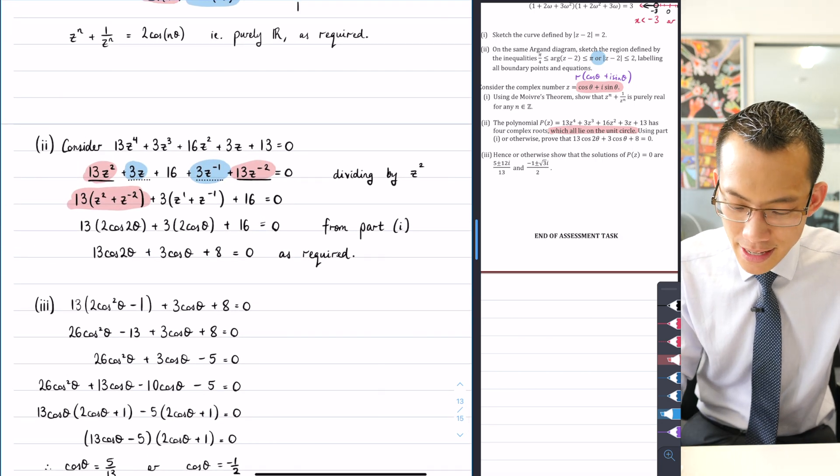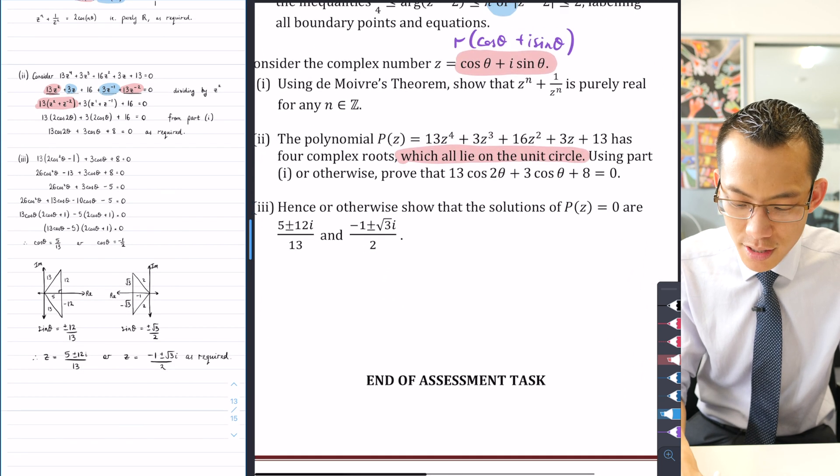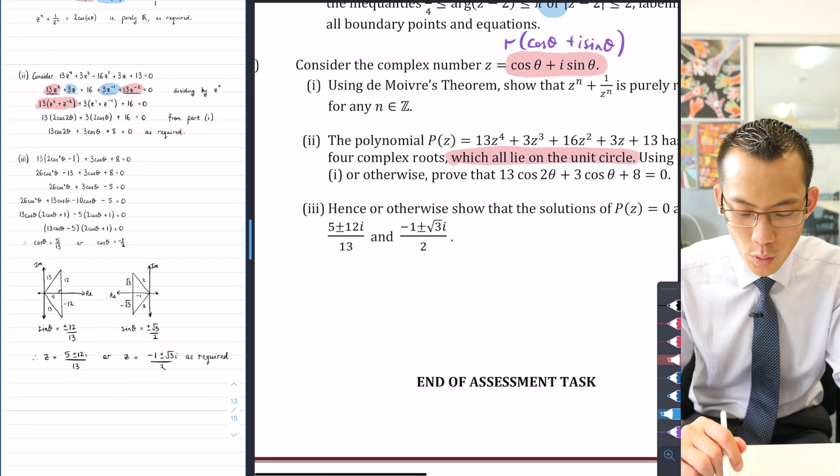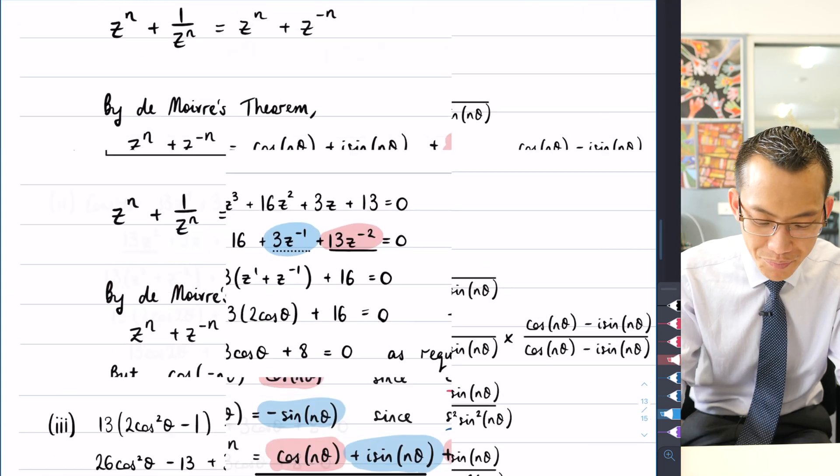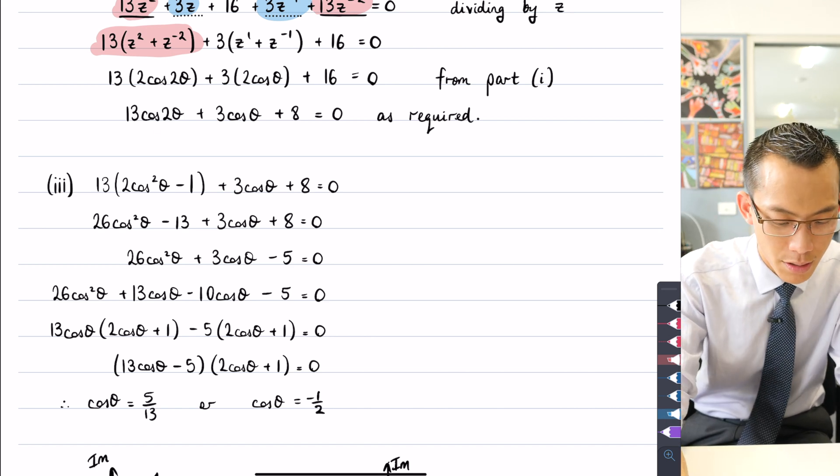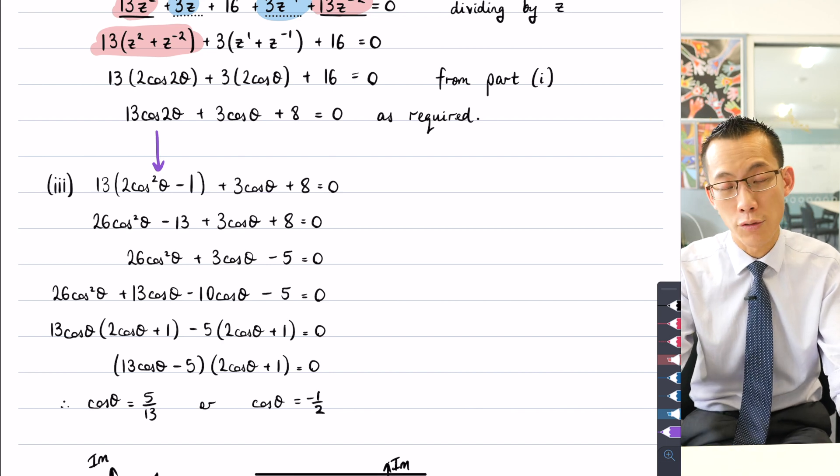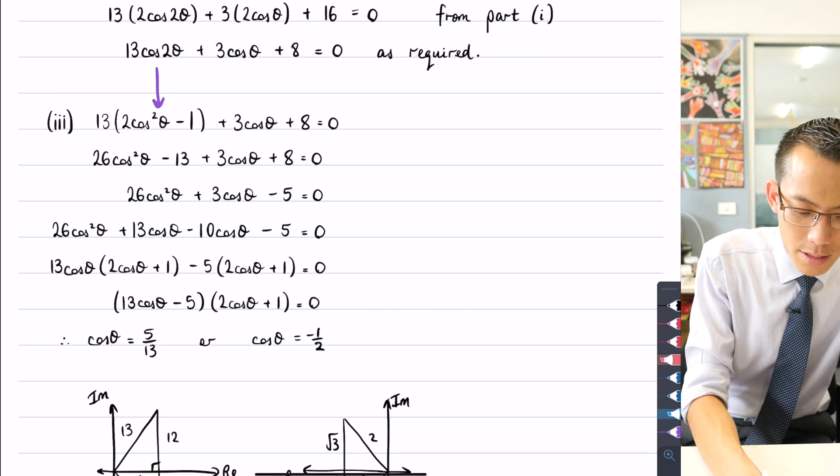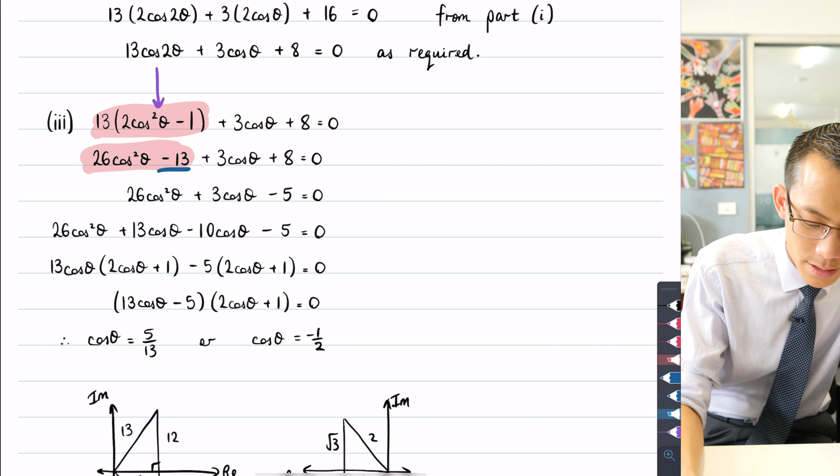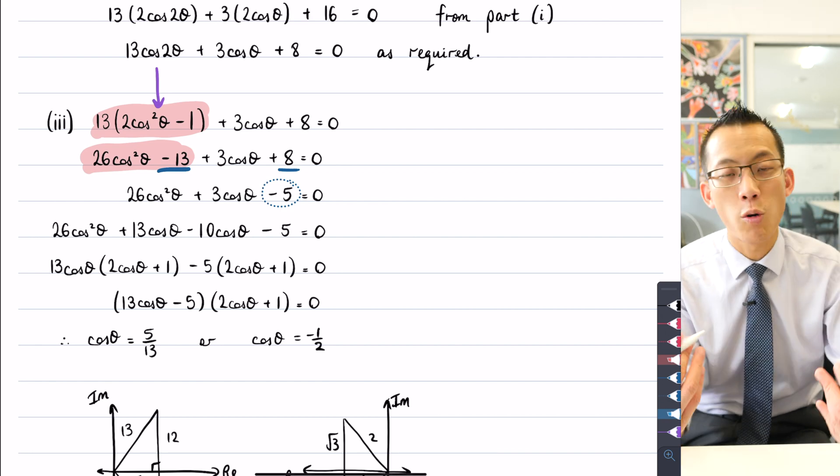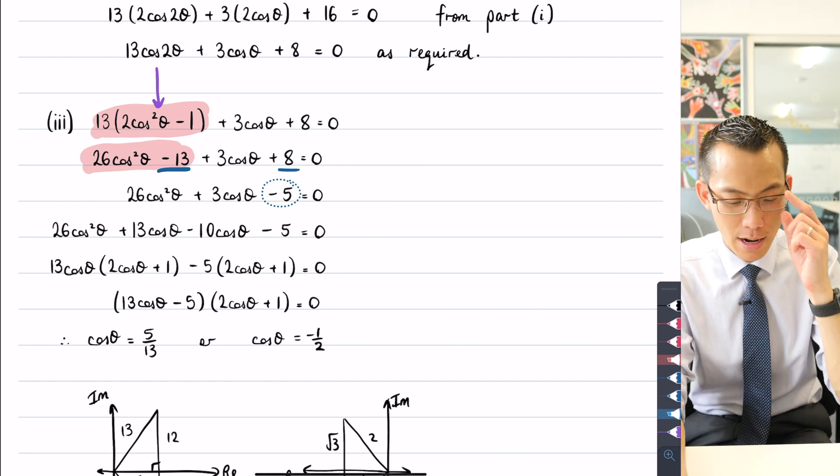Okay, we saw part two and then here comes the final part. It says hence or otherwise show that the solutions of p of z equals zero are five plus minus twelve i on thirteen, negative one plus minus root three i on two, right? How do we do that? When you have a look at my solution here you can see what I've done from the immediately previous line in part two to the first line of part three is I've just used the double angle formula for cosine, right? I've just expanded here so you can see that when I've done that you get this term here expanding out into this and then once you've collected like terms you can see that minus thirteen and that eight that gives you this minus five. You then have a quadratic in cos, quadratic in cos theta I should say, which you can solve just like any other quadratic.